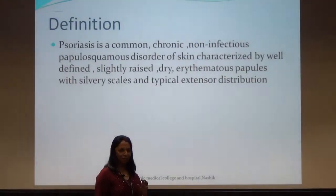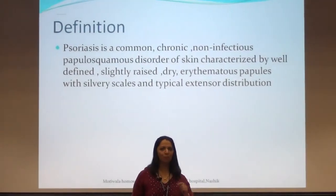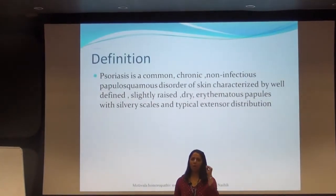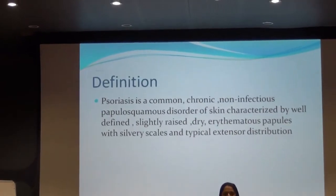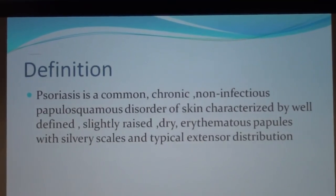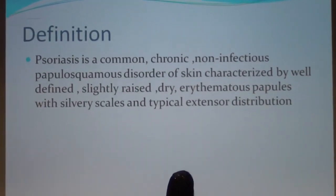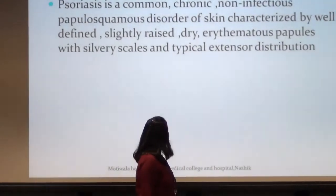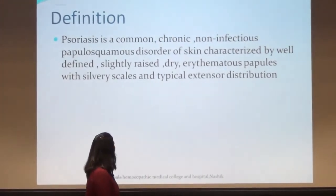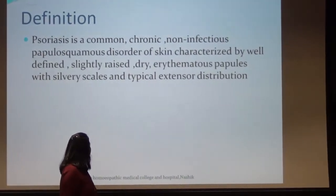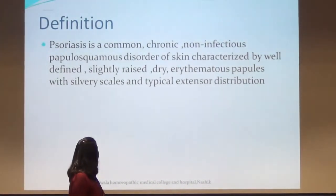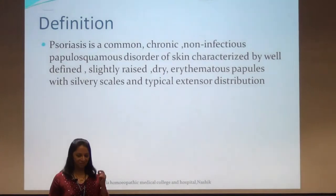I start with a very basic definition. Definition is very important when explaining any topic, even when writing a paper. Your definition should be comprehensive and should give the gist of the problem. Psoriasis is defined as a common, chronic, non-infectious, papulosquamous disease of skin characterized by well-defined, slightly raised, dry, erythematous papules with silvery scales and typical extensor distribution.